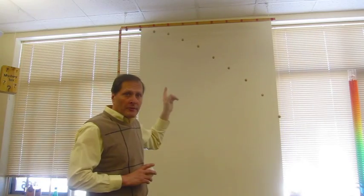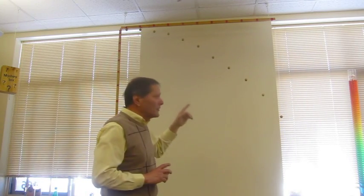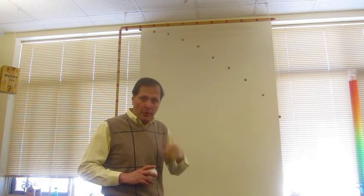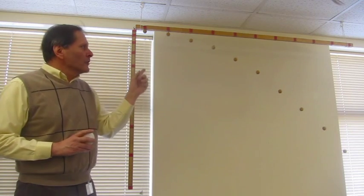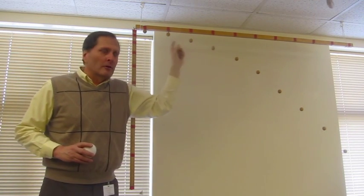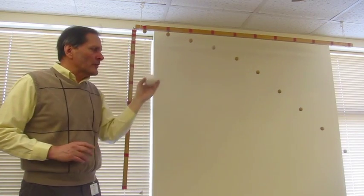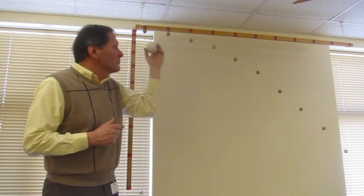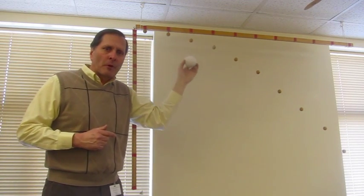This model represents that movement and displays what the object is doing horizontally versus vertically. On closer examination we see that there are marks here that are equally spaced along the horizontal axis. They're equally spaced because when you throw an object it is moving at a constant speed, which means it's moving the same distance for each moment of time.